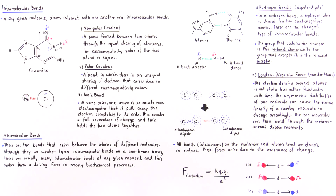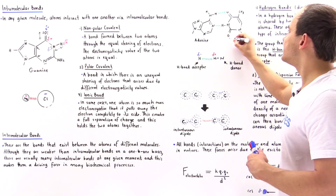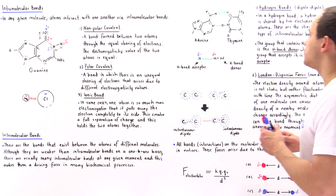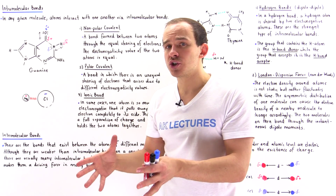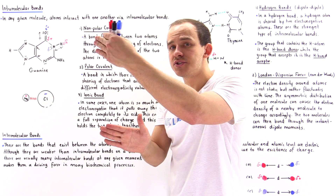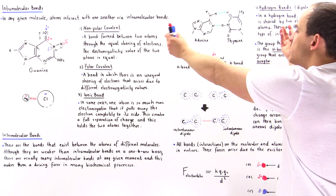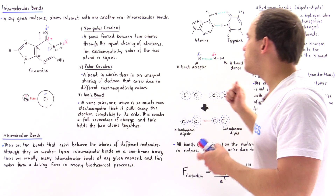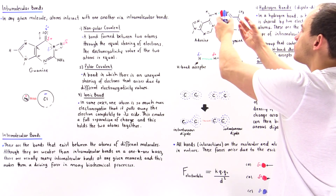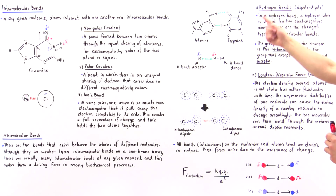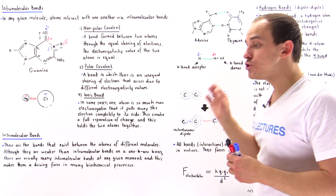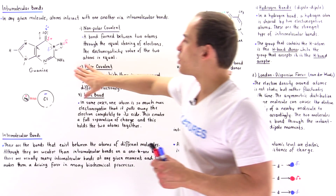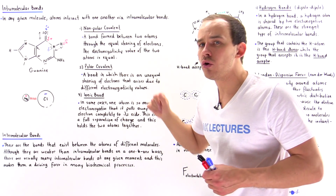A hydrogen bond is a specific type of dipole-dipole interaction and is the strongest type of intermolecular bond. When we examine DNA structure, we see that along the bases on opposite strands, the bases interact with one another via hydrogen bonds. Adenine and thymine interact via these hydrogen bonds. In a hydrogen bond, a hydrogen atom is shared by two electronegative atoms. Let's go back to this molecule to examine the polar covalent bonds that are also relevant here.